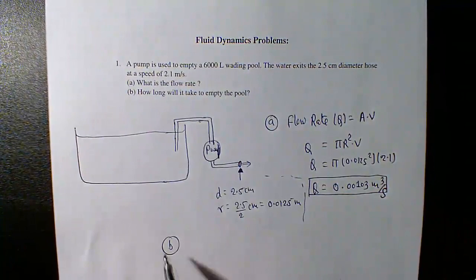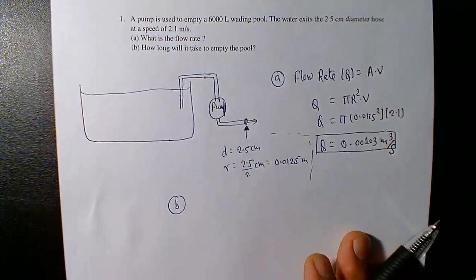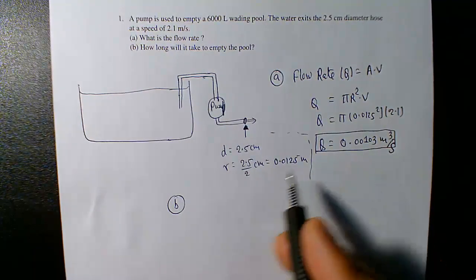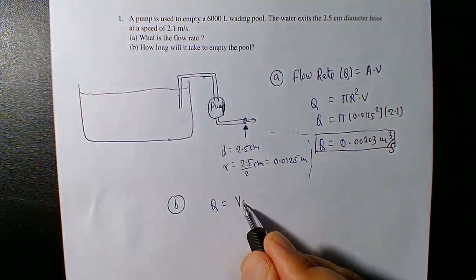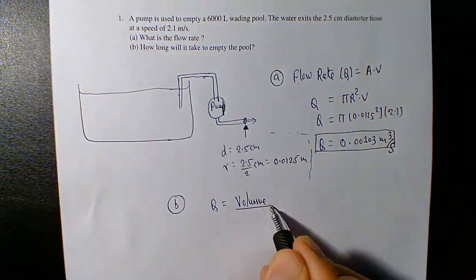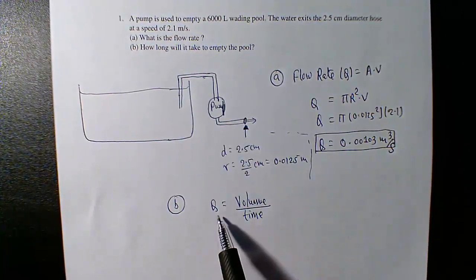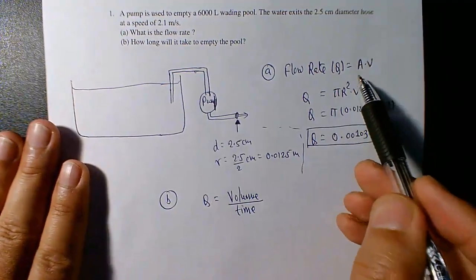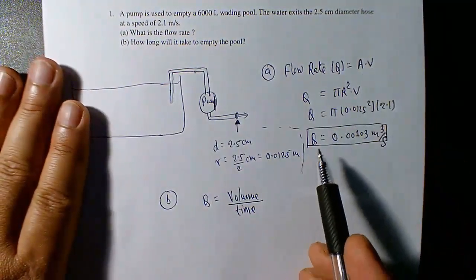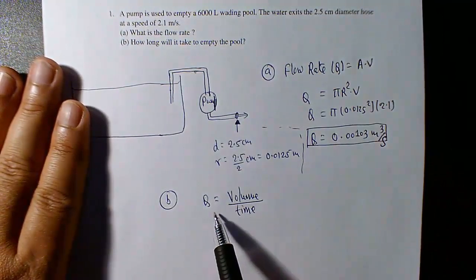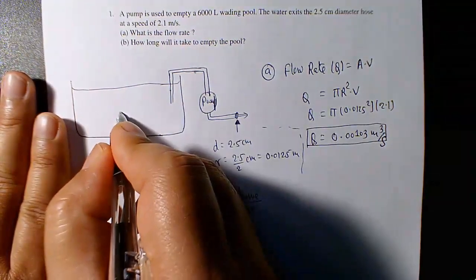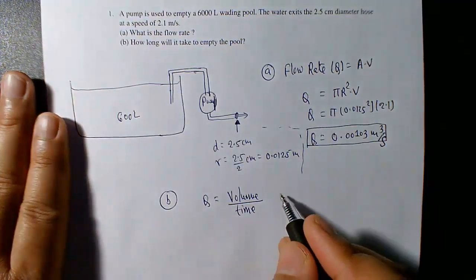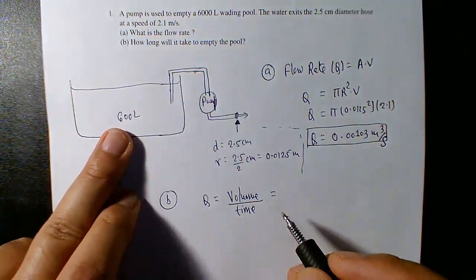The second part asks how long it will take to empty the pool with the same constant flow rate. Remember, flow rate is volume of fluid flowing per unit time. That is the basic definition: Q equals volume divided by time. The total volume is 6,000 liters, but since the flow rate is in cubic meters per second, we must convert. Six thousand liters must be expressed in cubic meters.